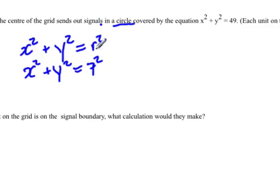Since r is our radius, then r equals 7, and that would be kilometers. Therefore, the radius of the signal is 7 kilometers.